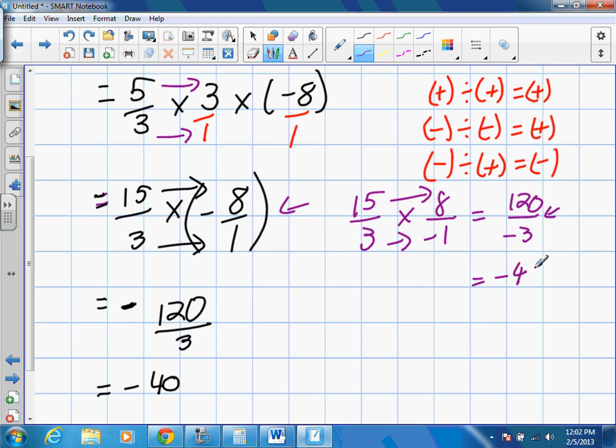120 divided by negative 3 is negative 40. So whether you think of them as whole terms being positive or negative, or you apply the negative to either the top or the bottom, you'll still end up at the exact same answer. Okay? Just make sure you're going through the actual multiplication division rules the way they're written out.